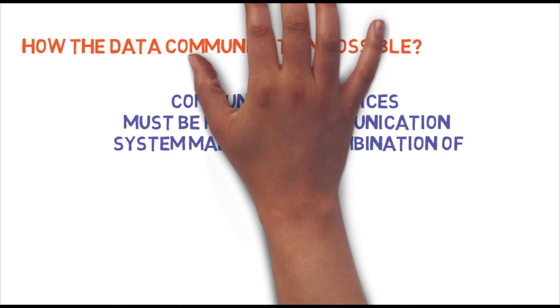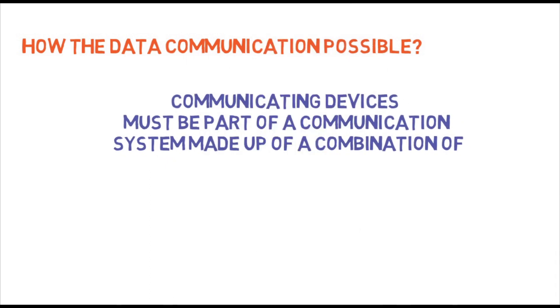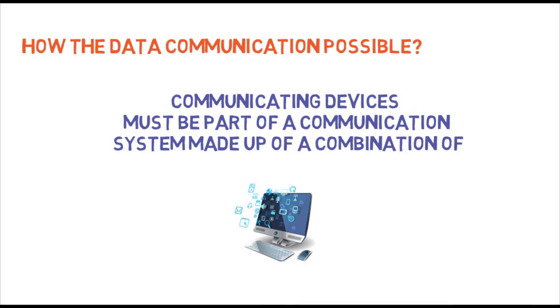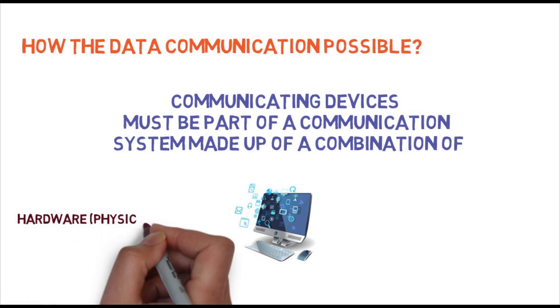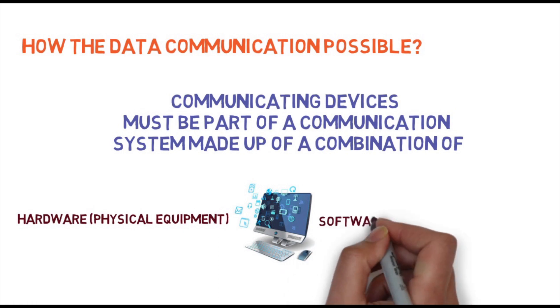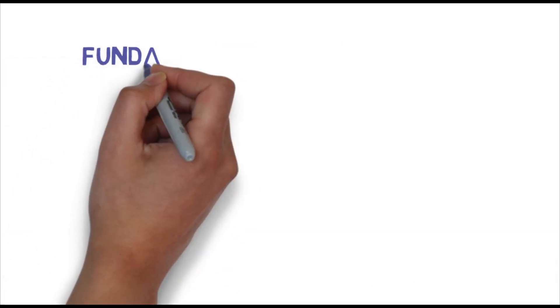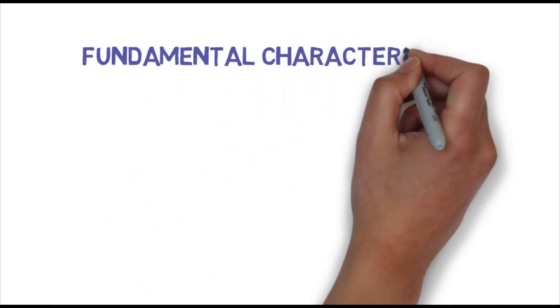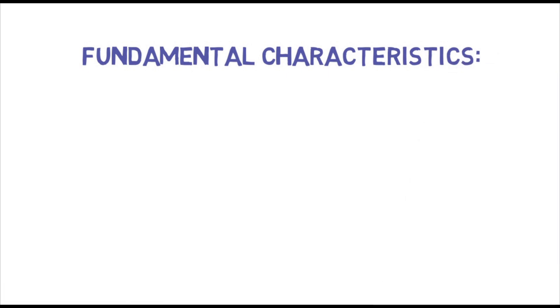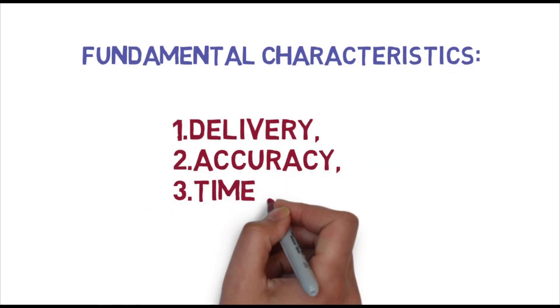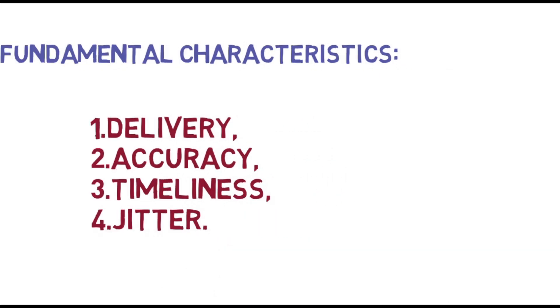Third: how is data communication possible? For data communications to occur, the communicating devices must be part of a communication system made up of a combination of hardware — physical equipment — and software — programs. The effectiveness of a data communications system depends on four fundamental characteristics: delivery, accuracy, timeliness, and jitter.